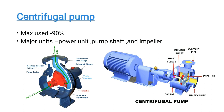Centrifugal pumps are used in approximately 90% of aquaculture ponds. There are two types of centrifugal pump designs. The centrifugal pump has three major parts: the power unit, the pump shaft, and the impeller. The power unit is the electric motor.